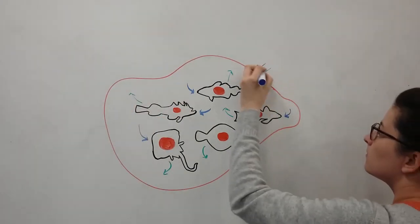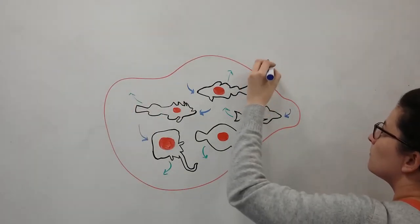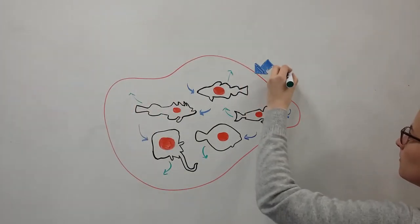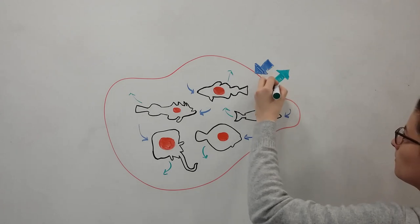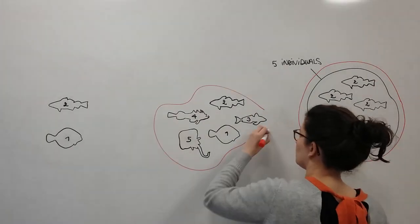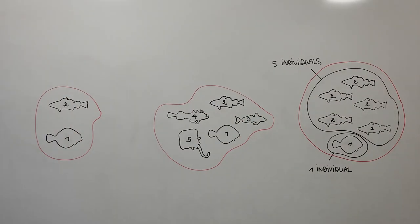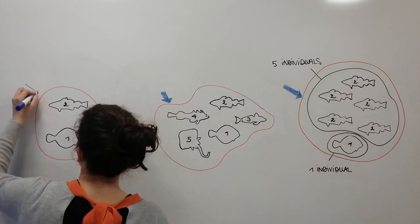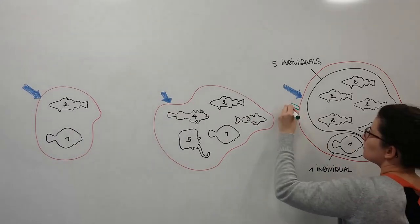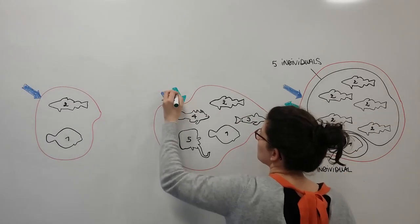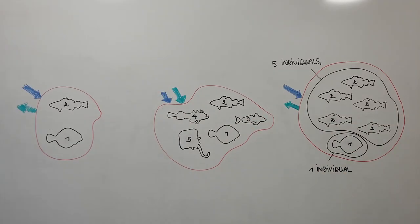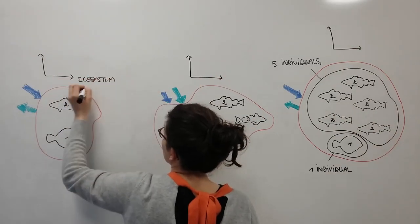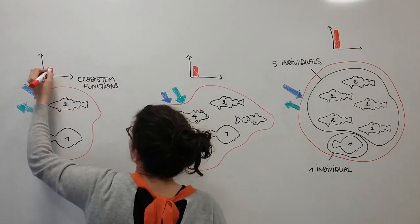These metrics can be extended to all the fish in an area and are called ecosystem functions. Finally, I evaluate how differences in biodiversity from one community to another can result in differences in ecosystem functions.